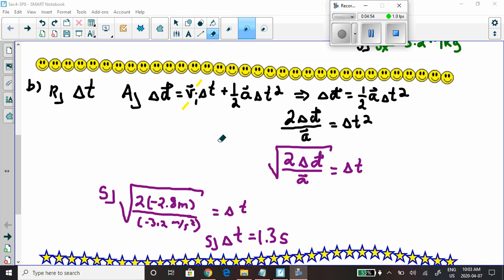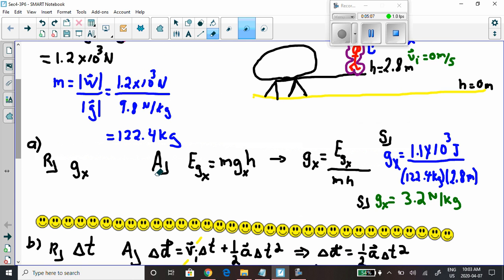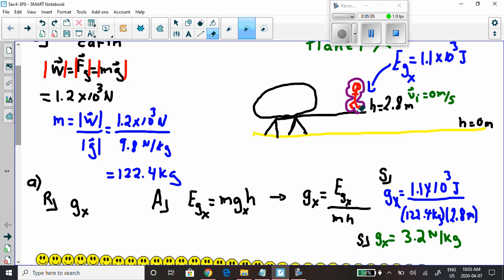All right. Well, part B wants us to calculate time. How long does it take the astronaut to step off the capsule and land on the surface of Planet X? So they're stepping off the capsule.